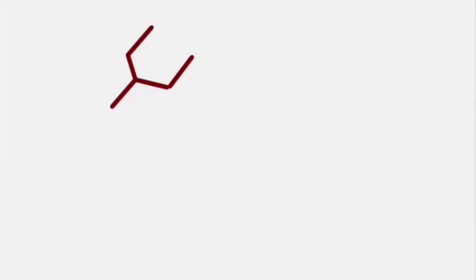The first structure we have, the longest continuous parent chain is identified here as being five carbons long. Five carbons represents a parent name of pentane.